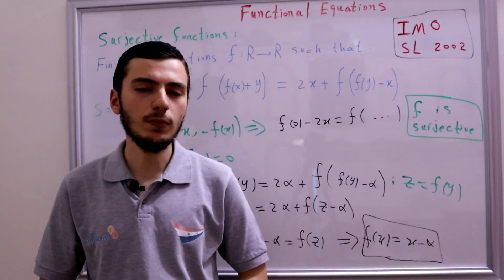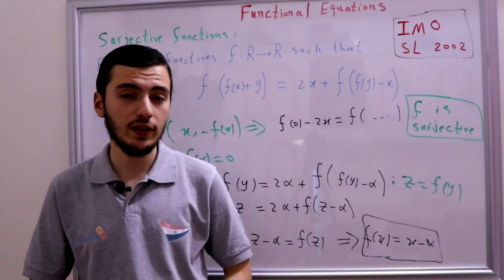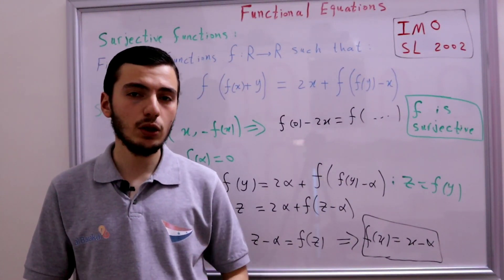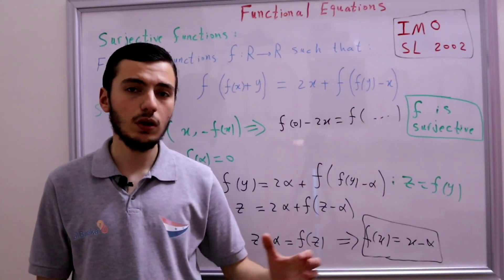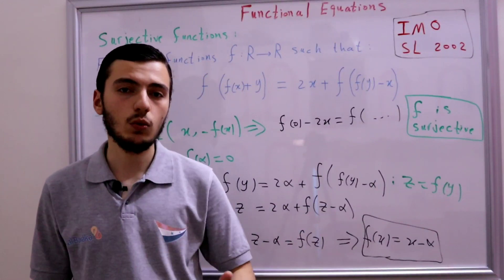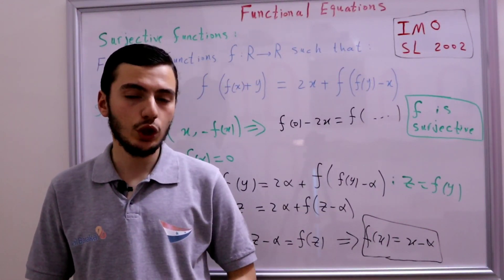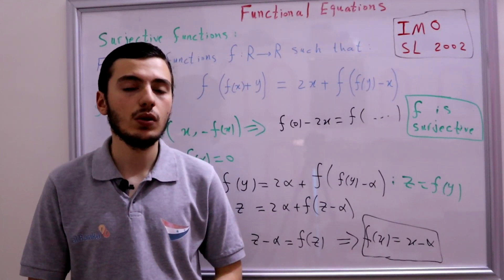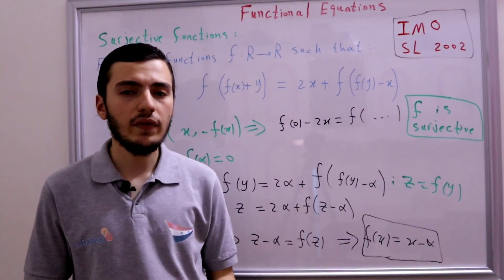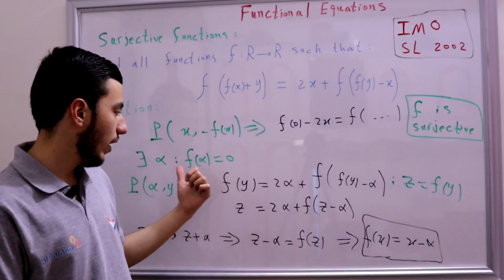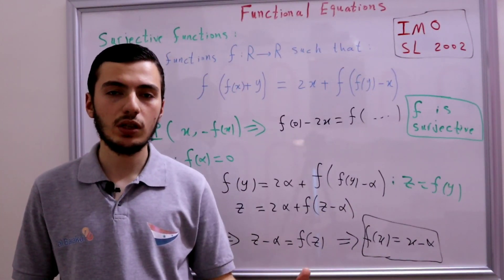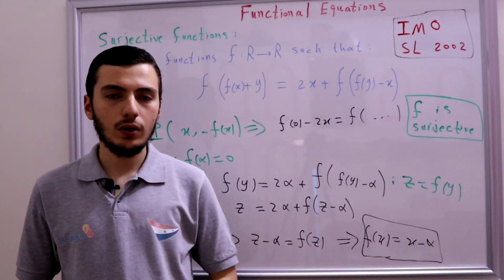After solving these two problems, I hope you appreciate the power of surjectivity. Always remember these two tricks. The first trick: when a variable appears inside f throughout your equation, define z = f(that variable) to simplify. The second trick: use an unknown variable α — here we used f(α) = 0, but you can use f(α) = 1 or f(α) = -1. Use whatever you need, but usually zero and one are most helpful.